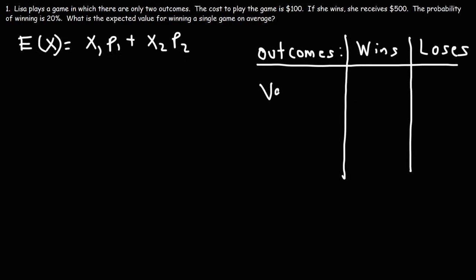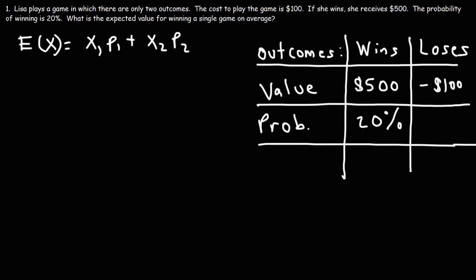Now the next thing we need to concern ourselves with is the value of each outcome. If she wins the game, she receives $500. If she loses the game, well the cost of play is $100, so she's going to lose $100. The next thing is the probability of each outcome. The probability of Lisa winning the game is 20% according to the problem. Based on that, what is the probability that she's going to lose? Well we know that the maximum probability is 100%. So there's a 20% chance that she's going to win the game. There's an 80% chance that she will lose the game, since there's only two outcomes.